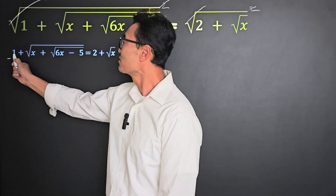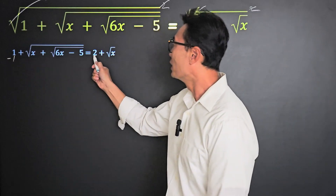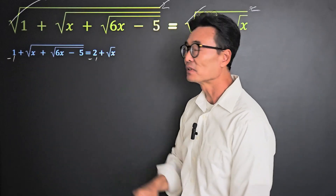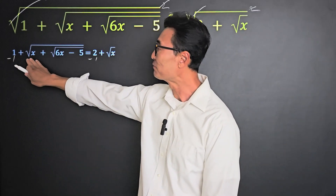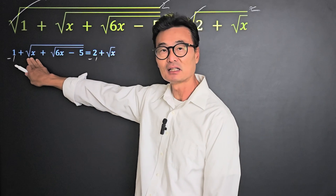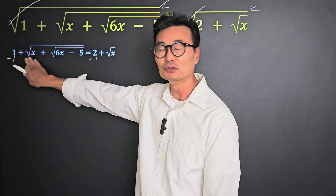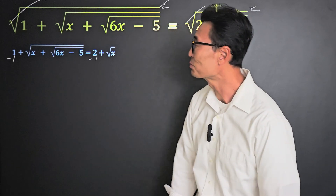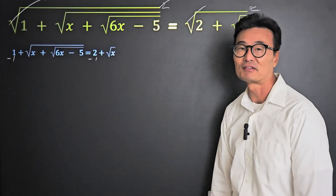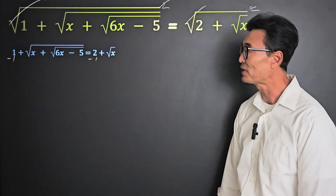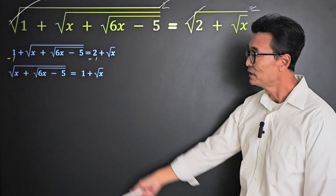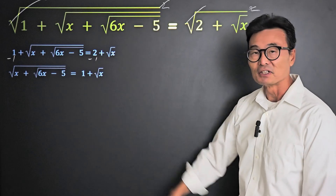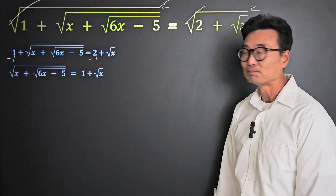Then let's go ahead and subtract 1 from the left and the right side so that we would have just that square root of x plus root 6x minus 5 on the left side, leaving us with this.